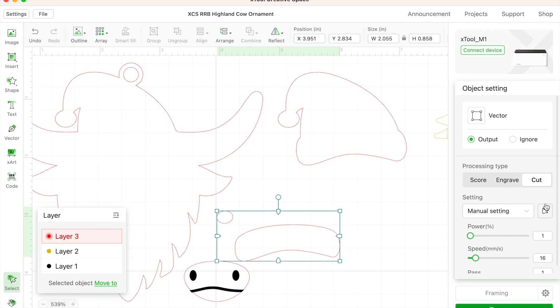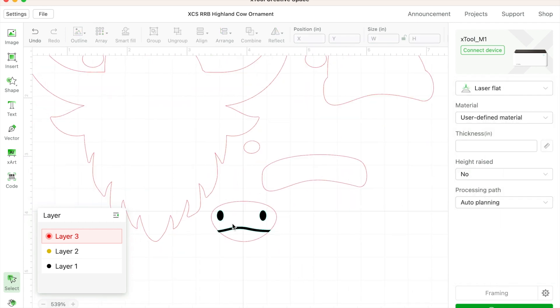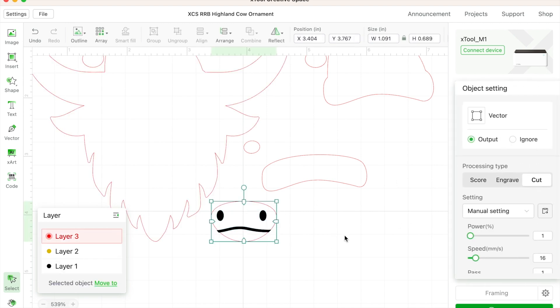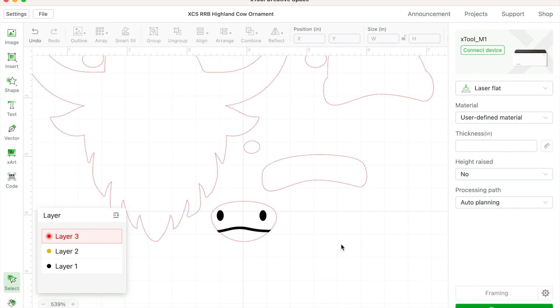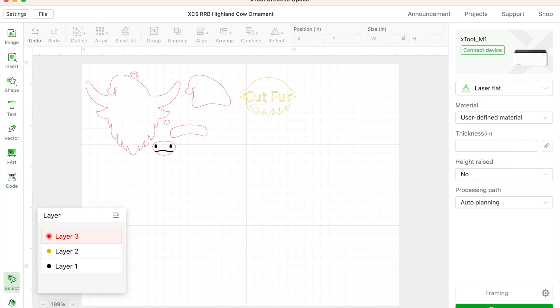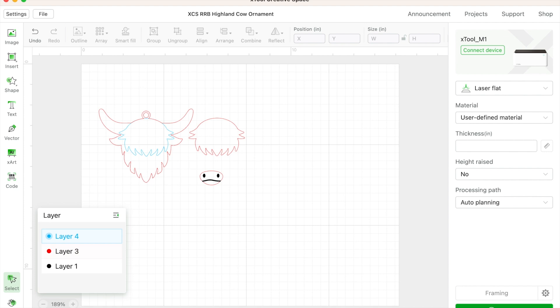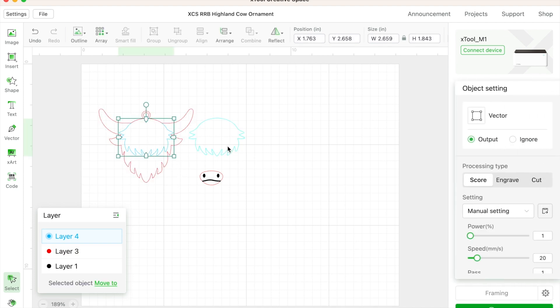So I'm setting everything here just to cut and I'm going to make sure this one is on engraved. There we go. And then the outside edge is cut. I just a couple of times make sure that I've done that because I've messed it up before.